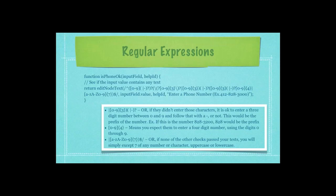The next series of characters state that if they didn't enter those characters, it is okay to enter a three-digit number between zero and nine and follow that with a dash or not. This would be the prefix of the number. For example, if this is the number 828-320, 828 would be the prefix. The next series of code means you expect them to enter a four-digit number using the digits zero through nine.